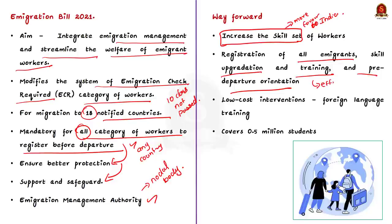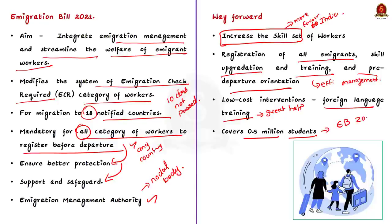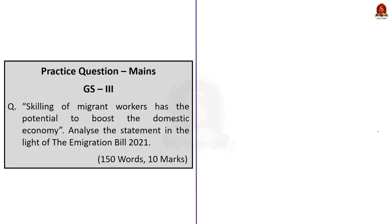Provisions of the bill such as registration of all immigrants, skill upgradation and training, and pre-departure orientation are in the right direction, providing a comprehensive dataset for efficient management of Indian migrants. Skilling of migrant workers has the potential to boost the domestic economy, and low-cost interventions such as foreign language training can be of great help. Besides workers, about 0.5 million students also migrate from India every year for education, and the Immigration Bill 2021 also covers such students. That's all regarding this news article.